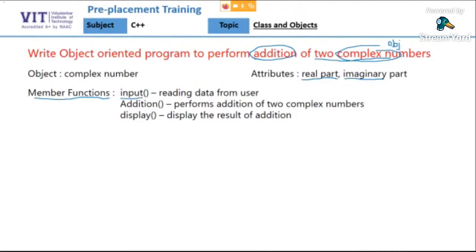As far as operations are concerned, I will decide to have a method 'input' for reading data from the user — reading the real and imaginary parts of both complex numbers. Then we should have a member function 'addition' which will perform addition of two complex numbers to generate the result, and one more member function 'display' which will display the result to the user. So the class will have two data members: real and imaginary part, and three member functions: input, display, and addition.